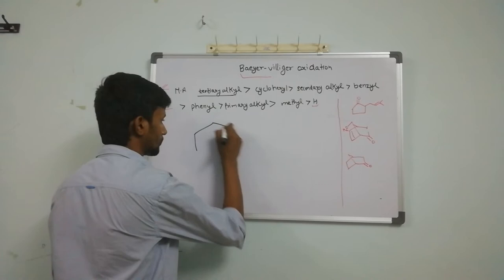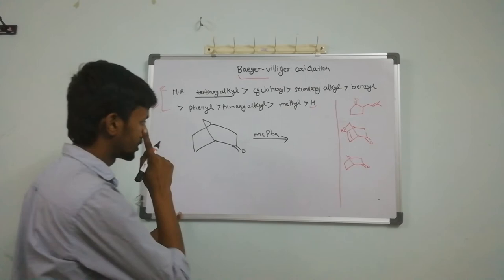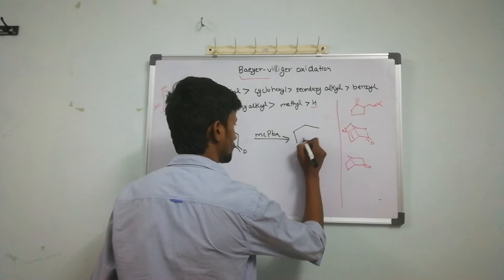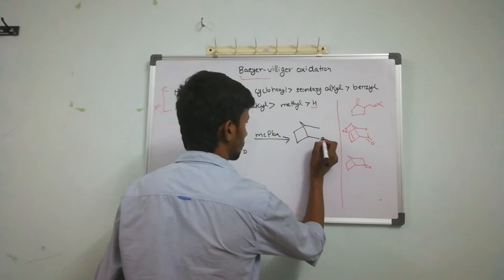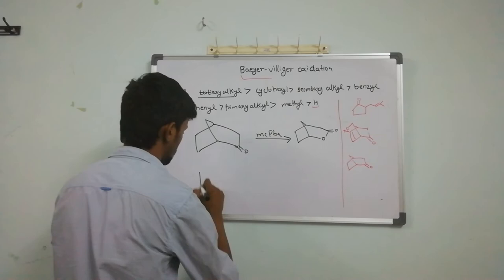Suppose we have a substrate like this with MCPBA. In that case there is no steric hindrance. This one is secondary and this one is tertiary. So, as in the general case, the insertion of oxygen is going to take place between the tertiary carbon and the carbonyl carbon. Let's take another example.